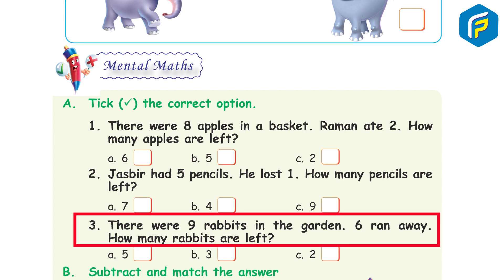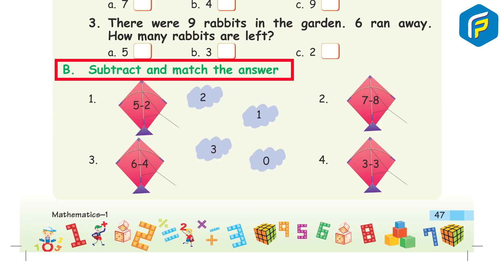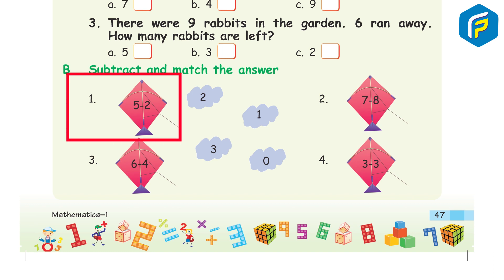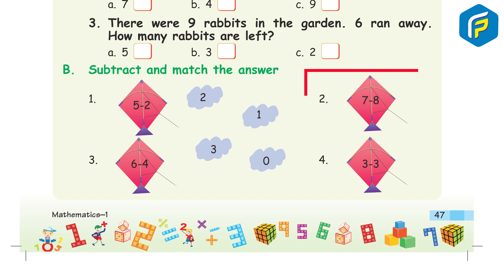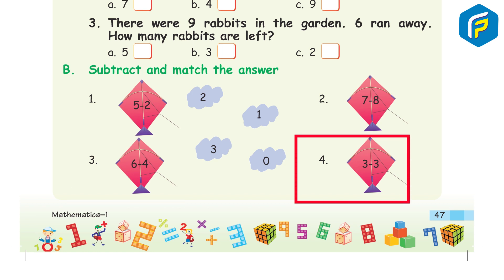There were 9 rabbits in the garden; 6 ran away. How many rabbits are left? Answer: 3. Subtract and match the answer: 1. 5 minus 2, 2. 7 minus 3, 3. 6 minus 4, 4. 3 minus 3.